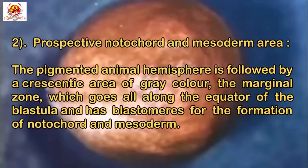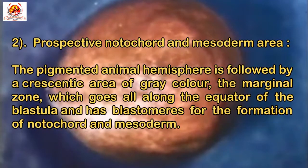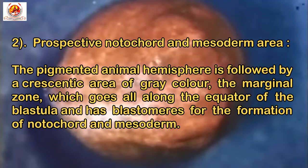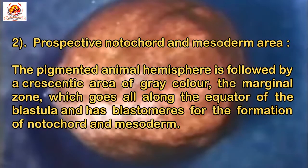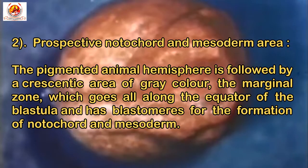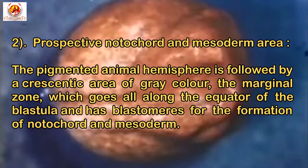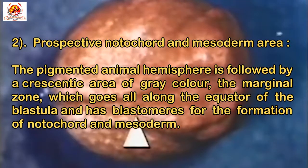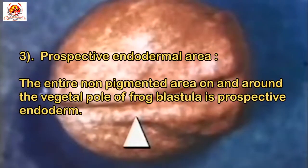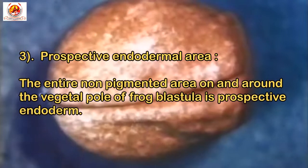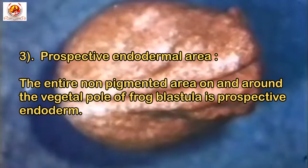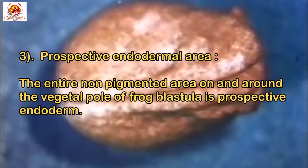Number two is the prospective notochord and mesoderm area. The pigmented animal hemisphere is followed by a crescentic area of grey colour — the marginal zone — which goes all along the equator of the blastula and has blastomeres for the formation of the notochord and the mesoderm. Number three is the prospective endodermal area. The entire non-pigmented area on and around the vegetal pole of frog blastula is prospective endoderm.